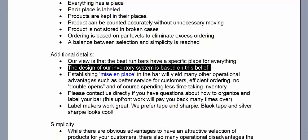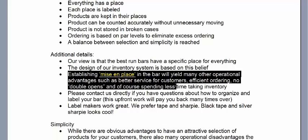Sometimes we get the objection: 'you want everything in the same place because that's how your system works.' That's actually not the case. We designed our system this way because when everything has a specific place, the bar operates better, you count inventory much faster — and let's be honest, no one likes counting inventory — and you're more accurate because you have to change things around less. When the software matches the order of products in real life, you can really run through counts quickly. At well-organized bars, we can count up to 500 items an hour.